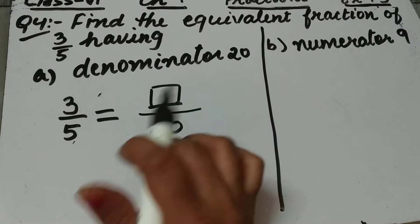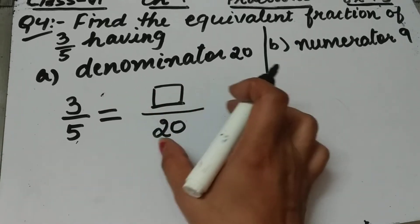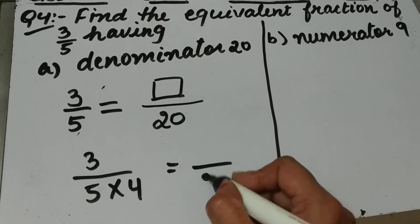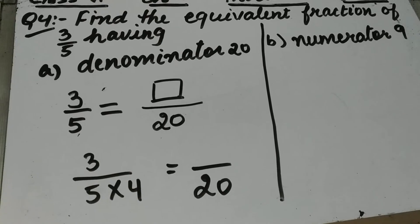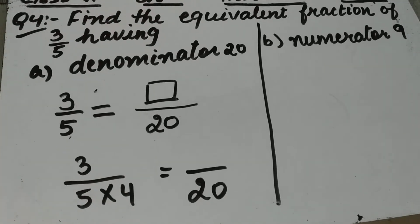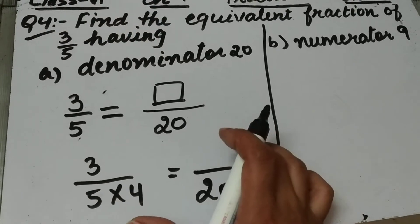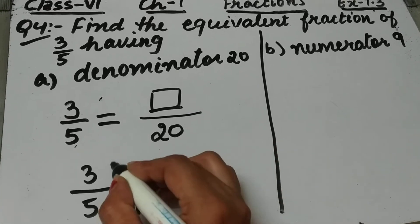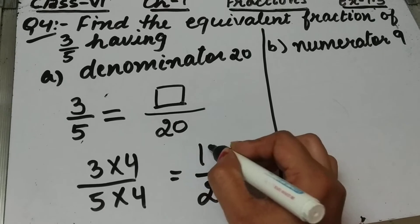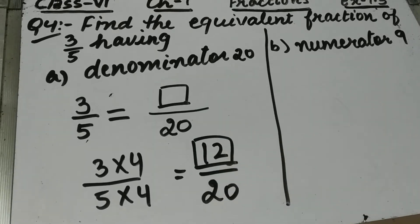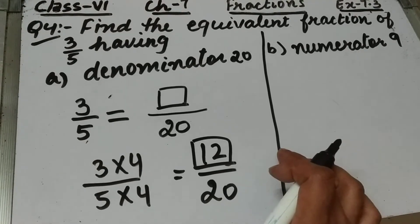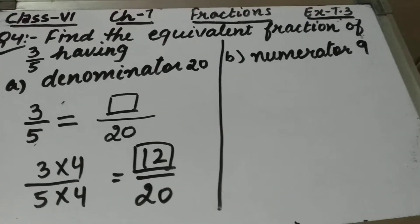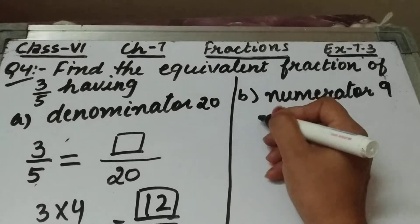Both these fractions are equivalent fractions. We have to check by which number I should multiply 5 to get 20. If I multiply 5 by 4, I will get 20. Because both fractions are equivalent, we multiply the numerator and denominator by the same number. So we multiply 3 by 4, and 3 times 4 is 12. The equivalent fraction of 3 by 5 having denominator 20 is 12 upon 20.